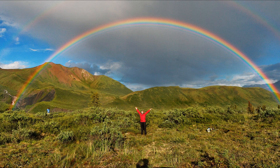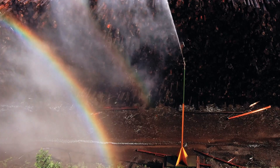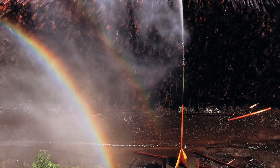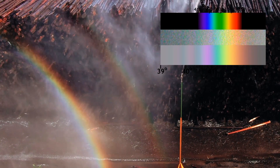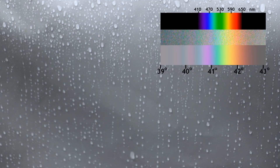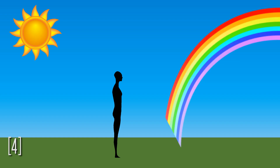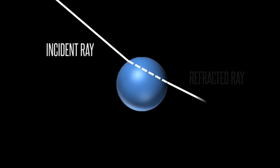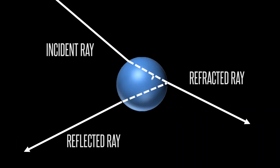A rainbow has the same properties as a prism. Replace the prism with water droplets in the atmosphere, and you have a rainbow. But there are some conditions to take into account. In order to see one, there must be a lot of water droplets in the air — this mostly happens after rain. Then you need to be positioned with the Sun behind you and the droplets in front of you. When light hits a droplet, a large amount refracts and a small amount is reflected.